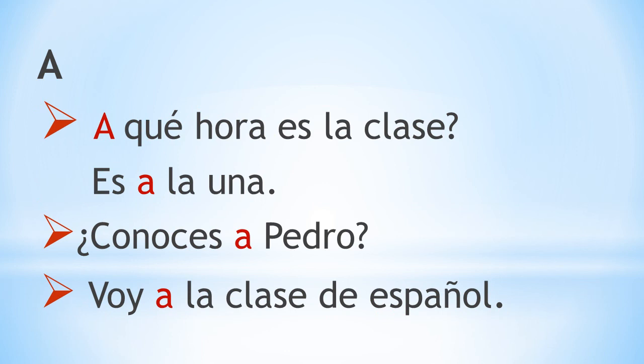A. A is used with time, direction and direct object pronouns. Por ejemplo, ¿A qué hora es la clase? At what time is the class? Es a la una. It is at 1. ¿Conoces a Pedro? Do you know Pedro? Voy a la clase de español. I go to the Spanish class.